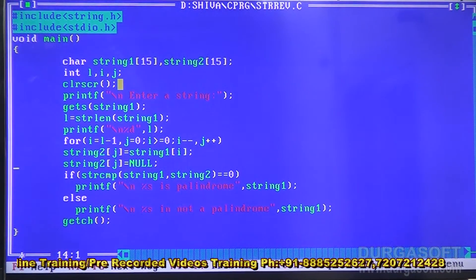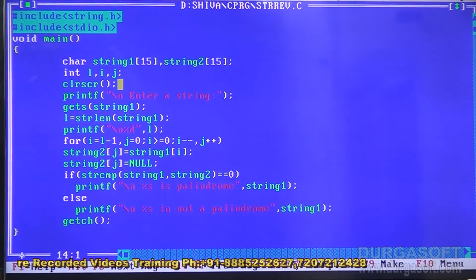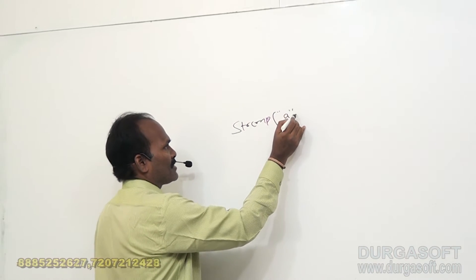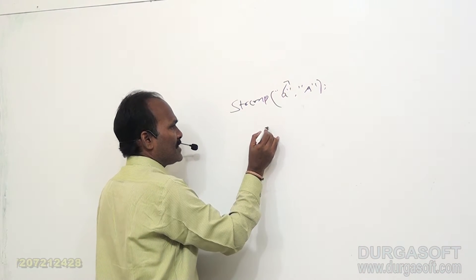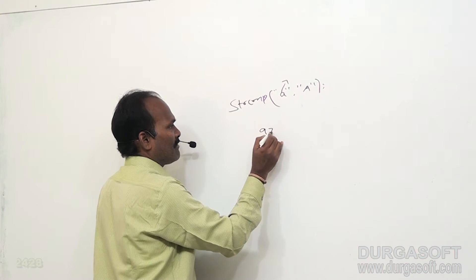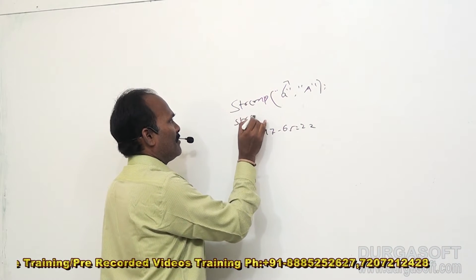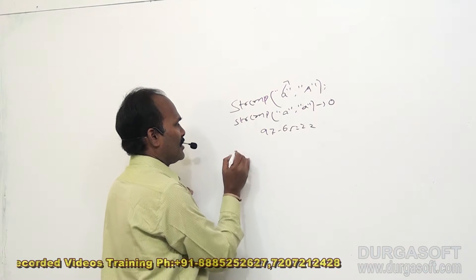The next program uses the string comparison function, which compares two strings. If the two strings are the same, it returns zero; otherwise it returns the ASCII value difference. For example, strcmp of small 'a' and capital 'A' returns 97 minus 65, which is 32. If you give strcmp of small 'a' and small 'a', it returns zero because they are the same.